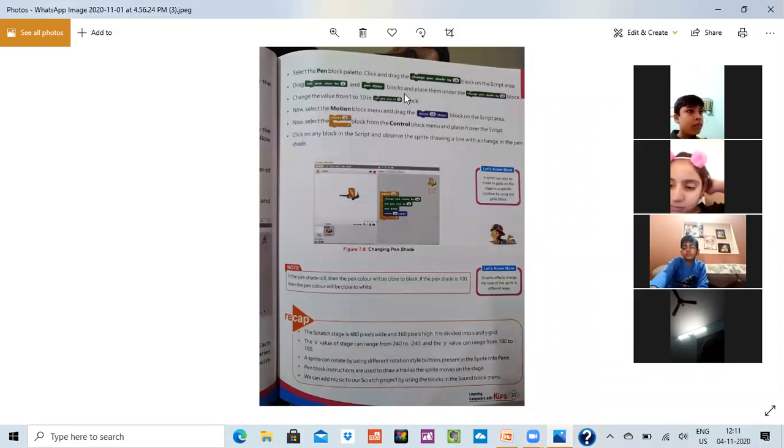Just go on the pen color. After that change the pen shade by selecting the color which you want to change and the color would be changed by itself. Now I will be unmuting you all so that one by one you all can ask your query.